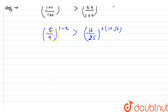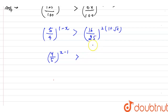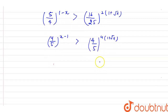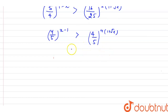I'm flipping 5 over 4, so it becomes 4 over 5 and the power reverses to (x minus 1). On the right side, I can write 16 as 4 squared and 25 as 5 squared, and taking the square outside gives (4 over 5) raised to the power 2(1 plus root x).